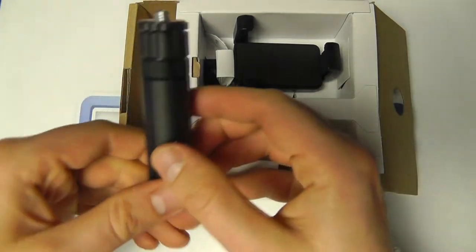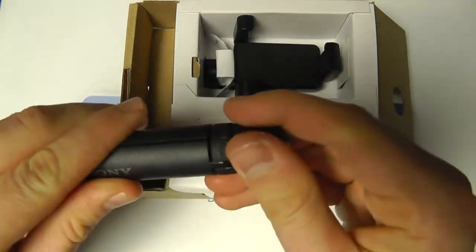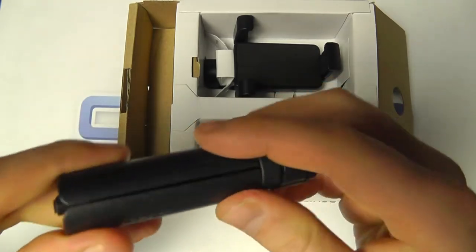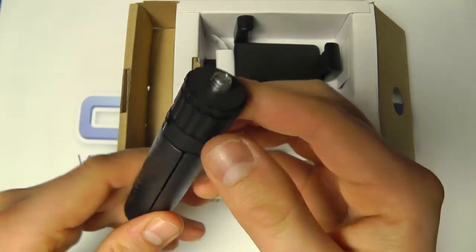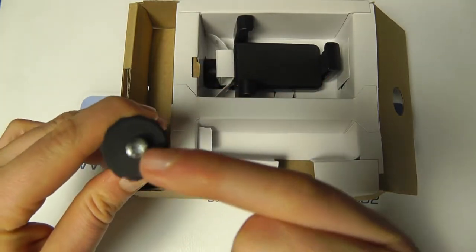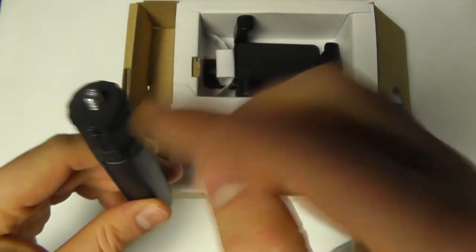We've got the tripod legs essentially—you can see the Sony logo. They've almost got a metal feel to them; I think it's more of a rigid plastic with a bit of texture to it. Then we've got the tripod mount which goes into the base of the holder.